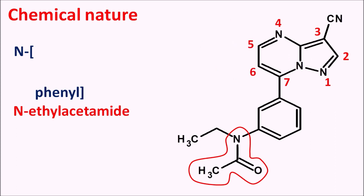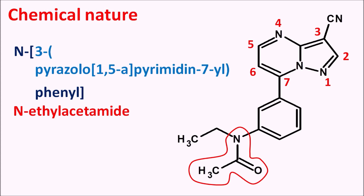Now this ring system is attached at the seventh position. Here we can observe two types of heterocyclic rings — one is the pyrazole and the second one is the pyrimidine. So this ring system is nothing but pyrazolopyrimidine, and this ring is attached at the third position of the phenyl ring — so 3-pyrazolo[1,5]pyrimidine-7-yl. This pyrazolopyrimidine ring is having a cyano group at the third position, so we can represent this as 3-cyano. That is the complete name of Zaleplon. So Zaleplon is a pyrazolopyrimidine derivative.